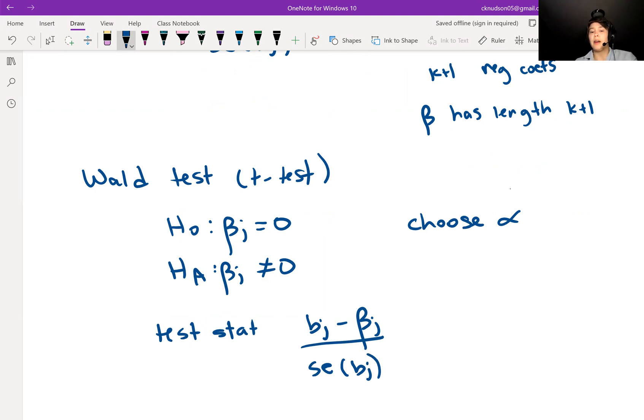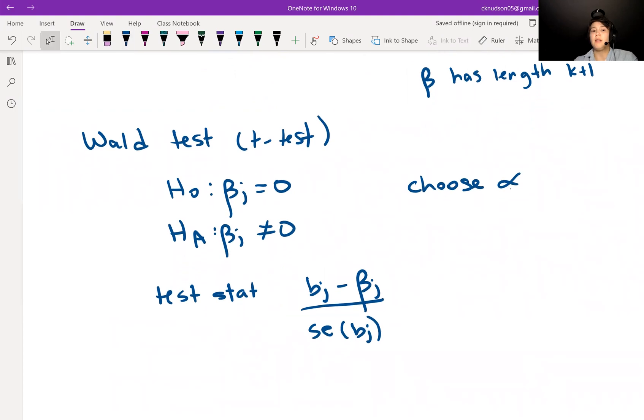Under the null hypothesis, beta J is zero, so we can go ahead and write just BJ divided by its standard error. That will have a T distribution with N minus K minus one degrees of freedom under the null hypothesis.